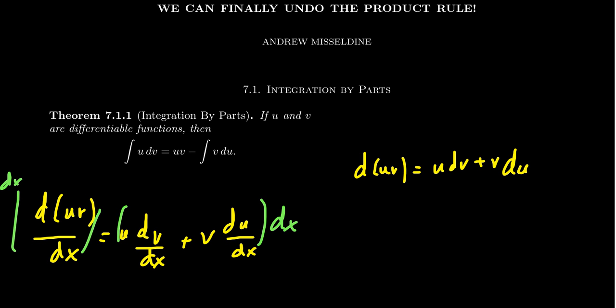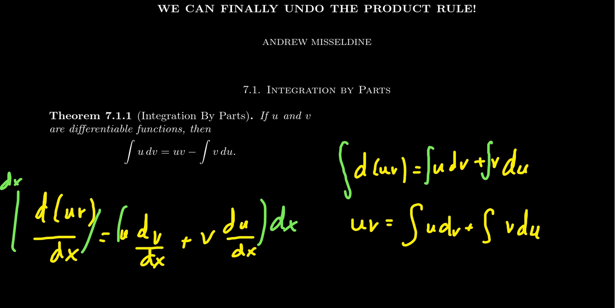Now if we integrate both sides, integrating the left-hand side and the right-hand side separately, we get uv on the left. On the right, we get the integral of u dv plus the integral of v du. If you subtract the integral of v du from both sides, you get the integration by parts formula: the integral of u dv equals uv minus the integral of v du.